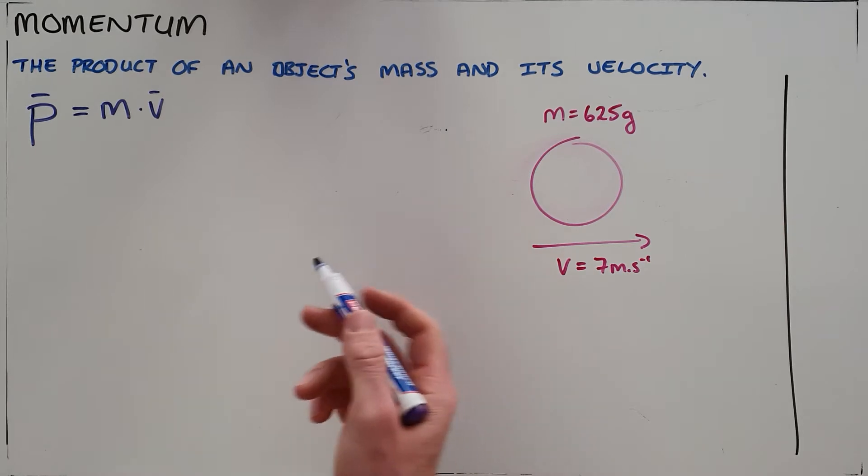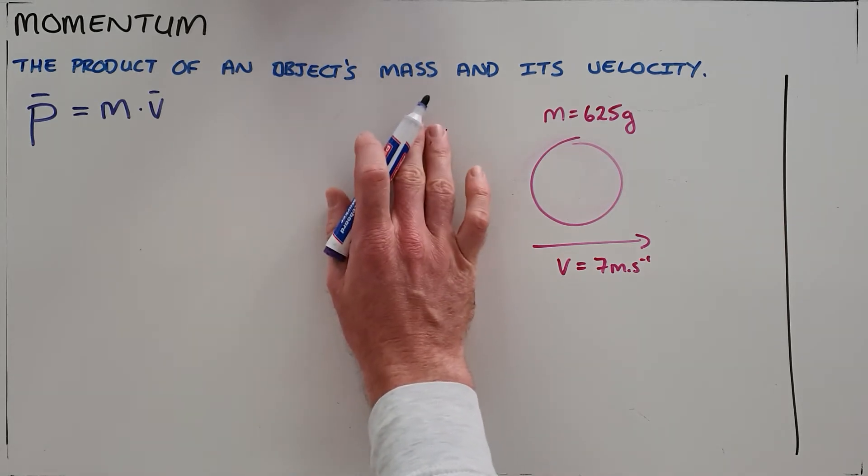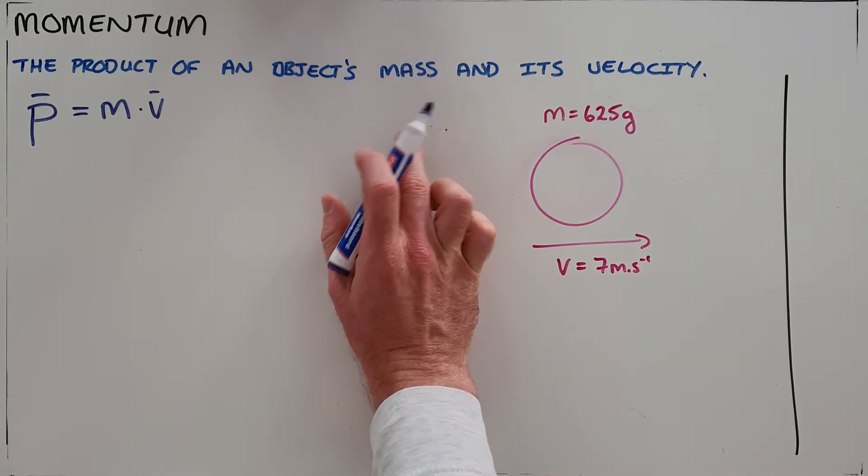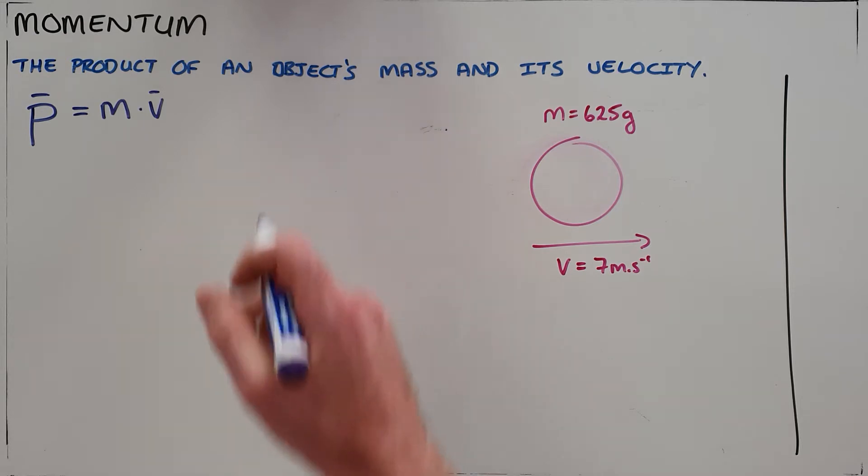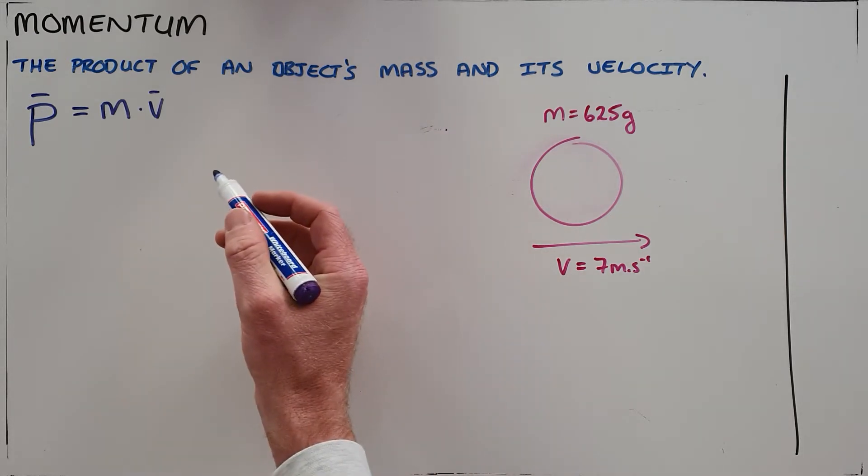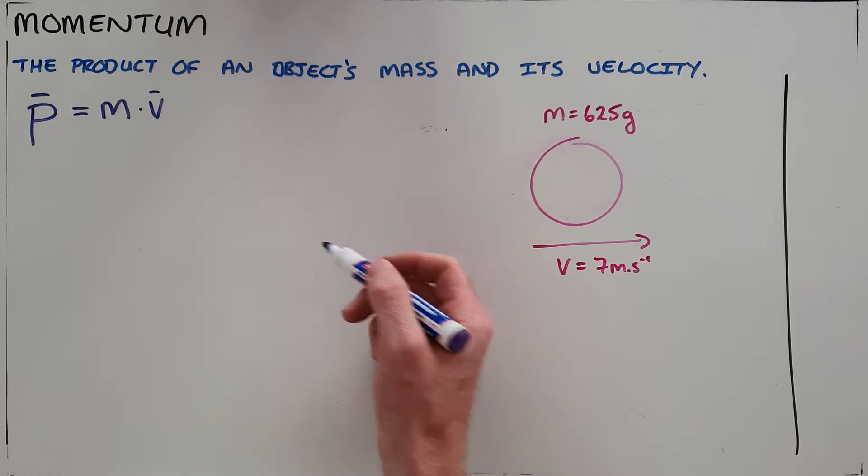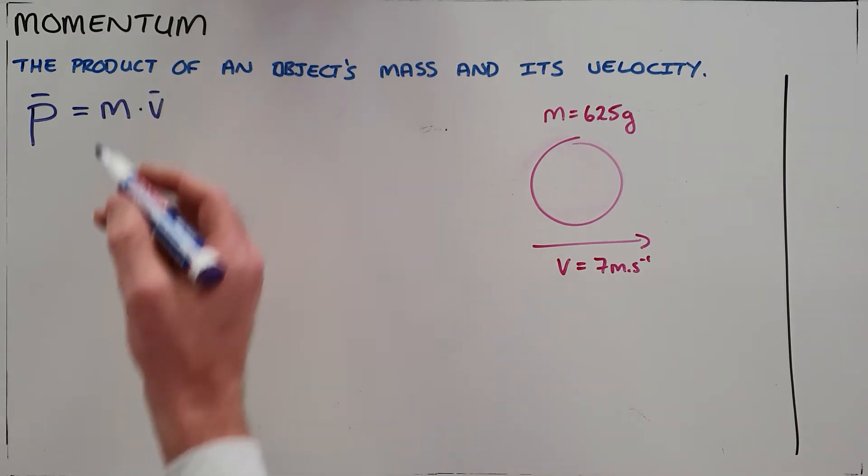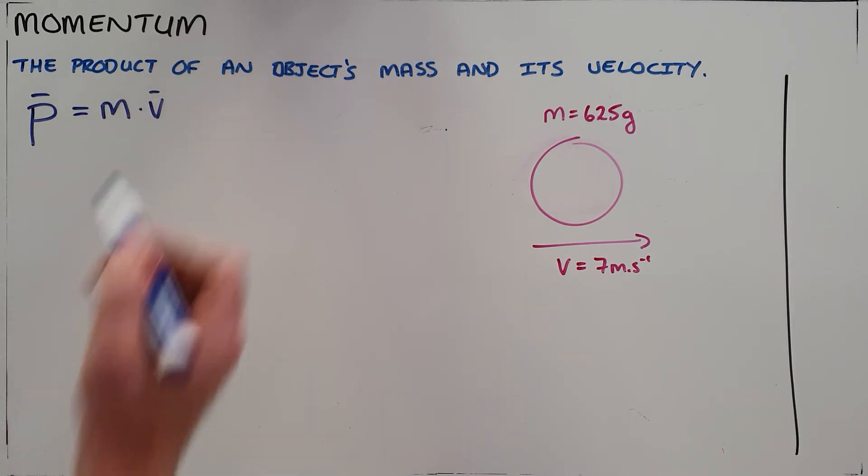If we think about momentum, we essentially think about it as how difficult it is to stop an object. We know that there are two things that make an object hard to stop: one is if it has a big mass and the second is if it is moving at a very high speed. So momentum being the product of an object's mass and velocity is essentially that difficulty of stopping.